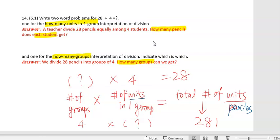For the units here, I picked pencils. For the groups, I picked students. In one student means every student gets that many.